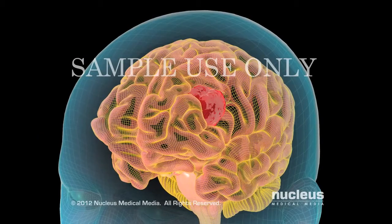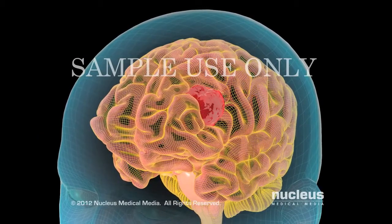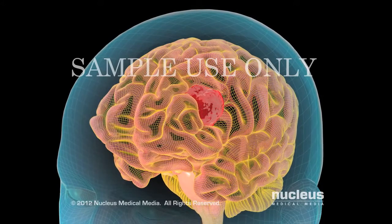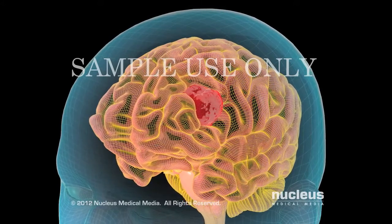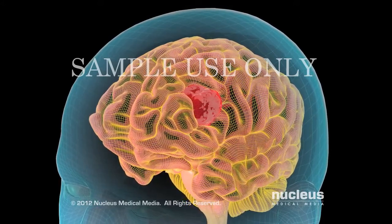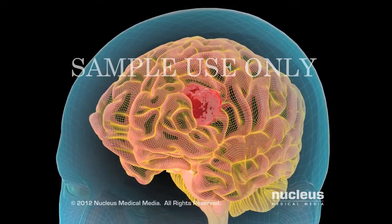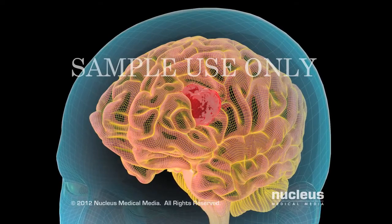The tumor's shape, size, type, and location help your doctor determine how the IMRT beam should be adjusted to hit your tumor and avoid healthy tissue.